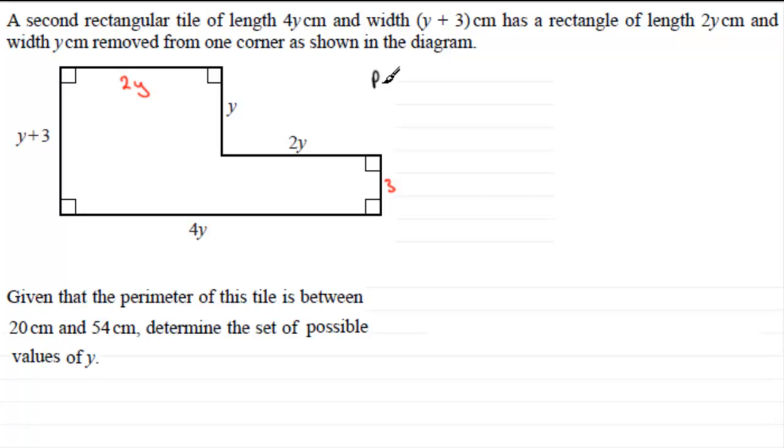So we've got that the perimeter is equal to 2y. Let's just put everything down. We've got 2y plus y plus another 2y here, and then plus the 3, and then plus 4y, and then plus the y plus 3.